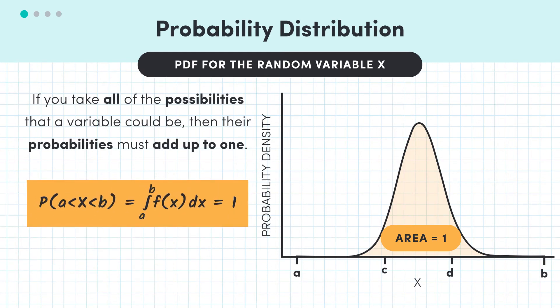So in maths speak, if the random variable X can only take values on the interval between a and b, the integral of the probability density function between a and b must be 1.